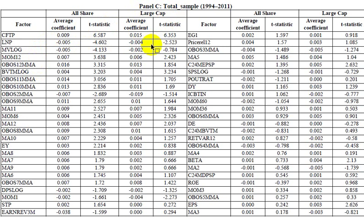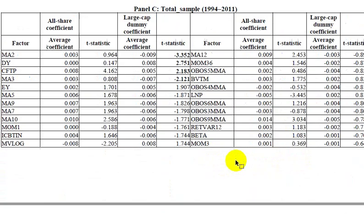That assumption is made to describe the liquidity effects on factors rather than company size itself. Interestingly, beta is near the very bottom of the T-statistics, suggesting the CAPM formula prominently used may not be effective at predicting stock returns.